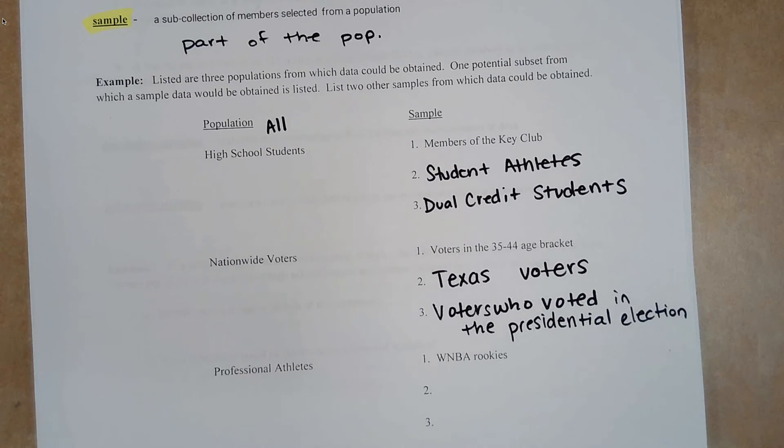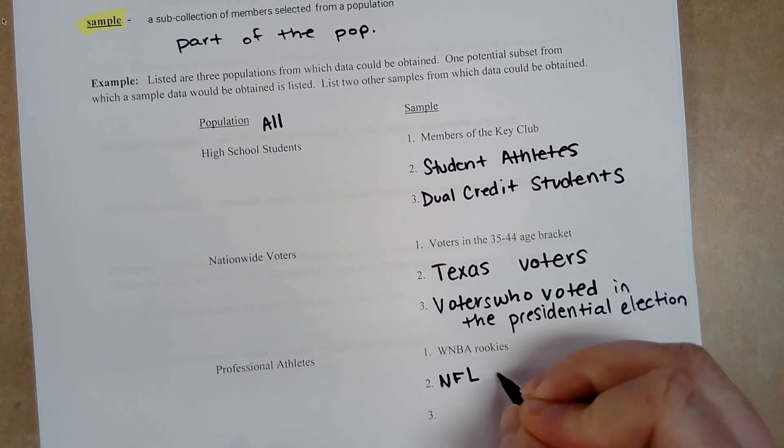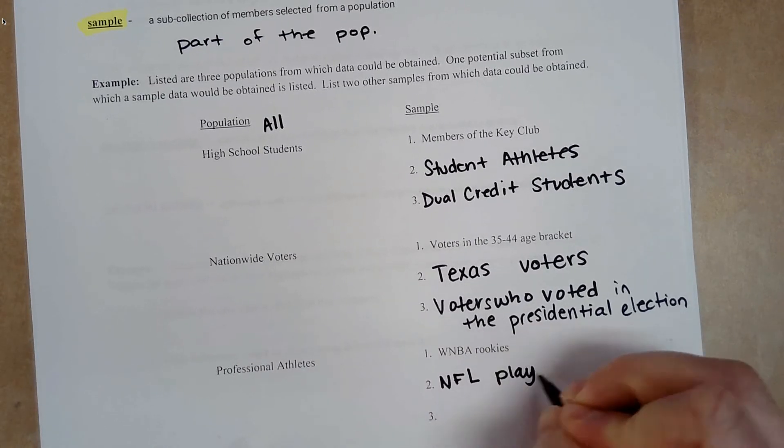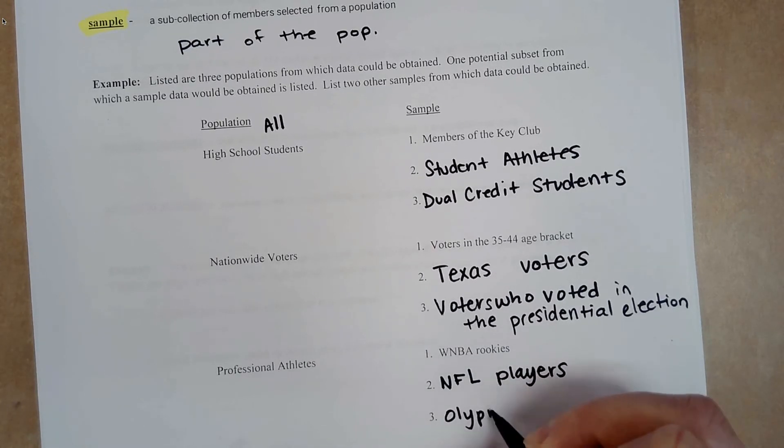Professional athletes. So we could look at WNBA rookies. Another sample would be NFL players. Those who have participated in the Olympics. So Olympians.